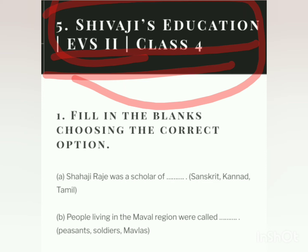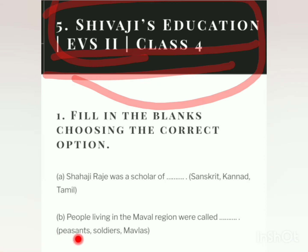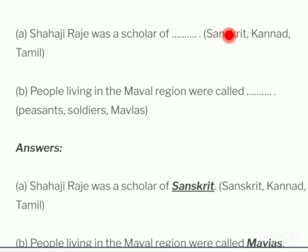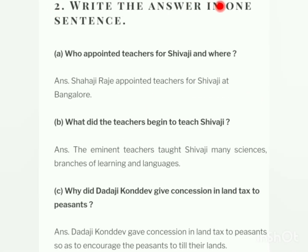First question: fill in the blanks choosing the correct option. Shahaji Razi was a scholar of dash — options: Sanskrit, Kannada, Tamil. Question B: people living in the Maward region were called dash — options: peasants, soldiers, Maudas. The correct answers are: Shahaji Razi was a scholar of Sanskrit, and people living in the Maward region were called Maudas.